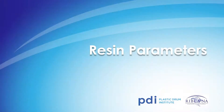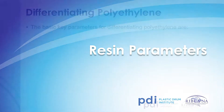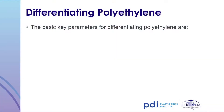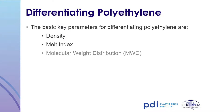Next, we'll discuss the key properties of various types of polyethylene, focusing on high-density polyethylene. There are many different ways to categorize polyethylene properties, but we'll focus on three key attributes: density, melt index, and molecular weight distribution.